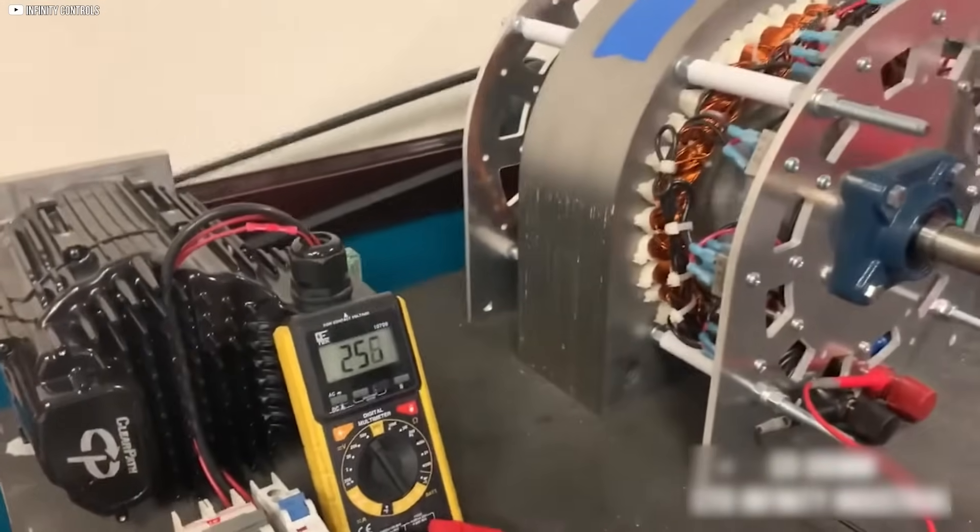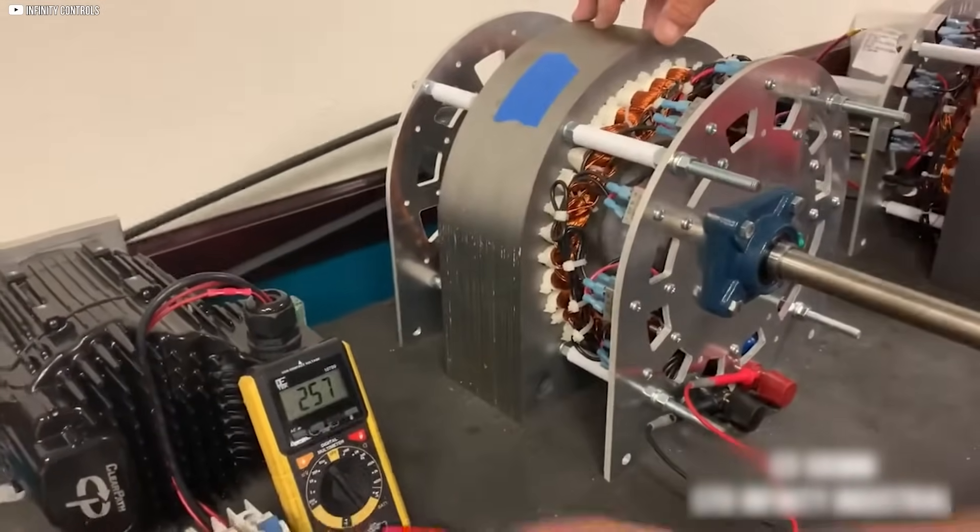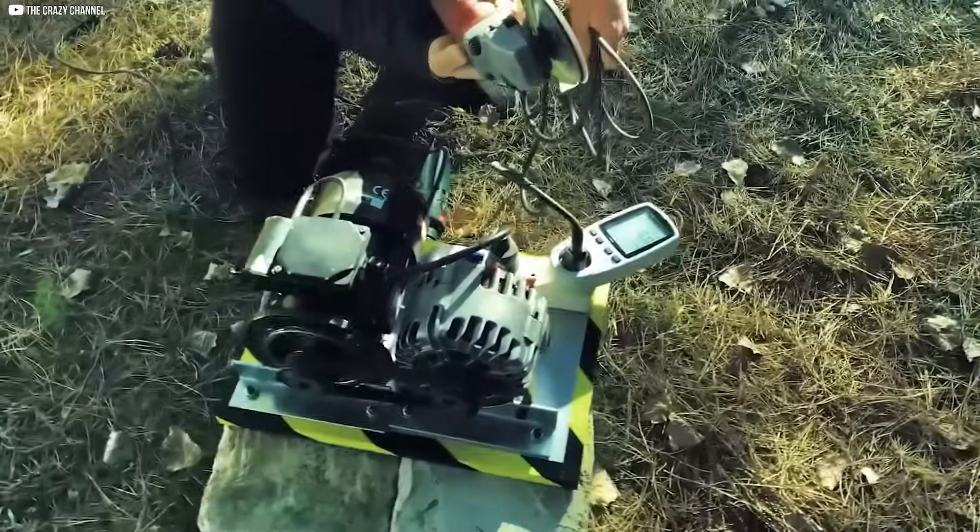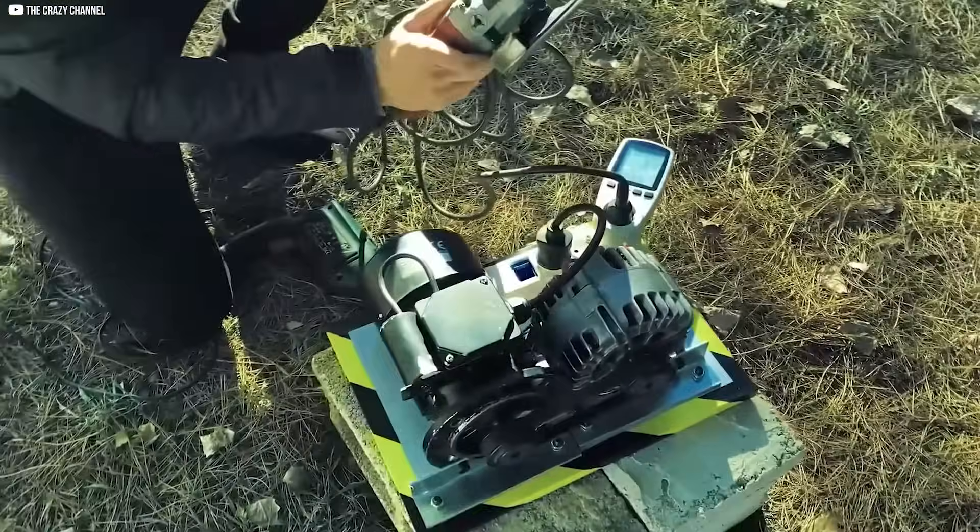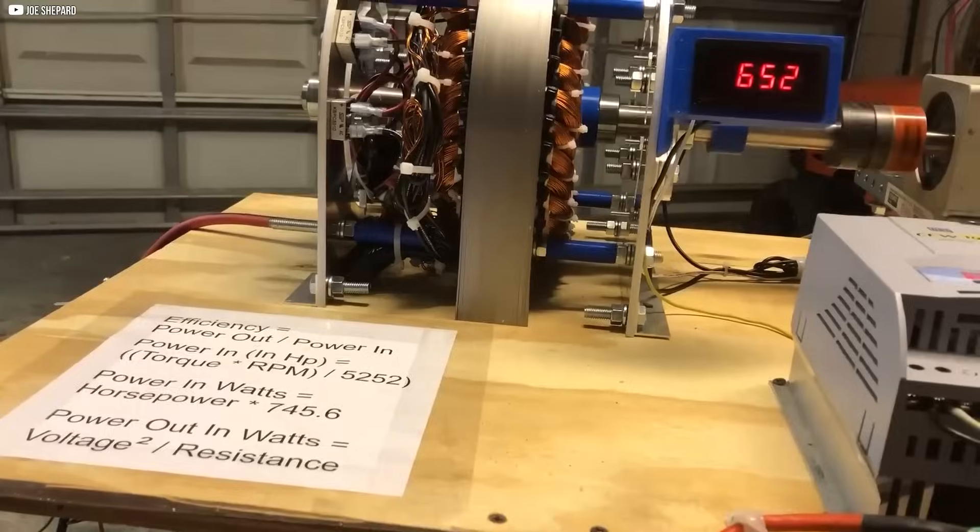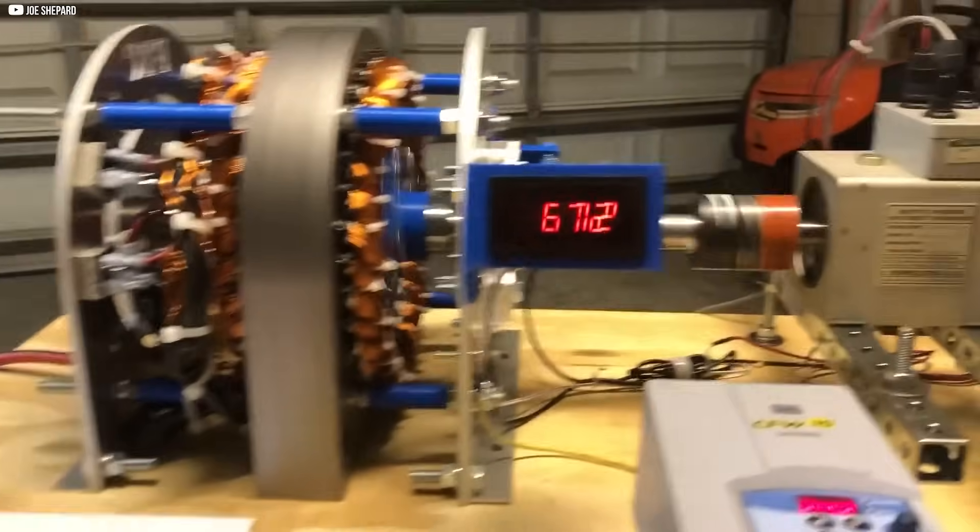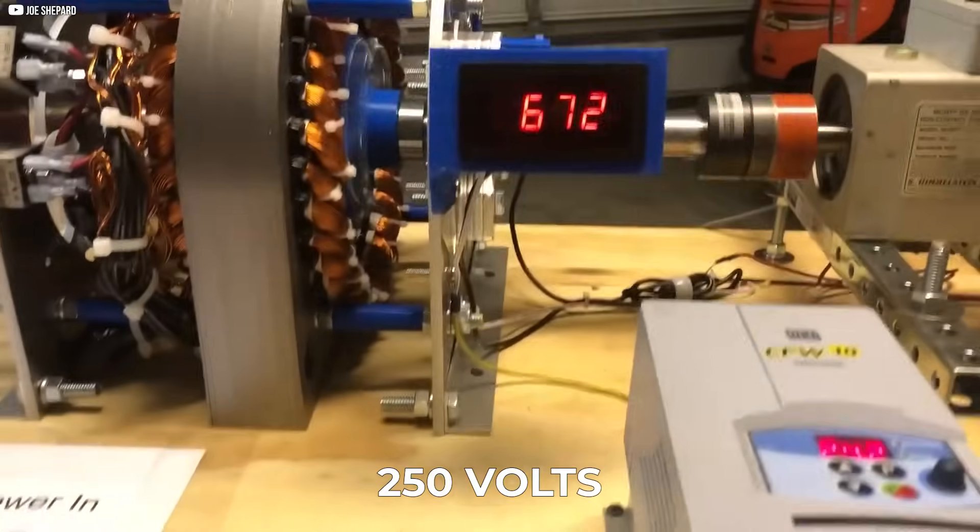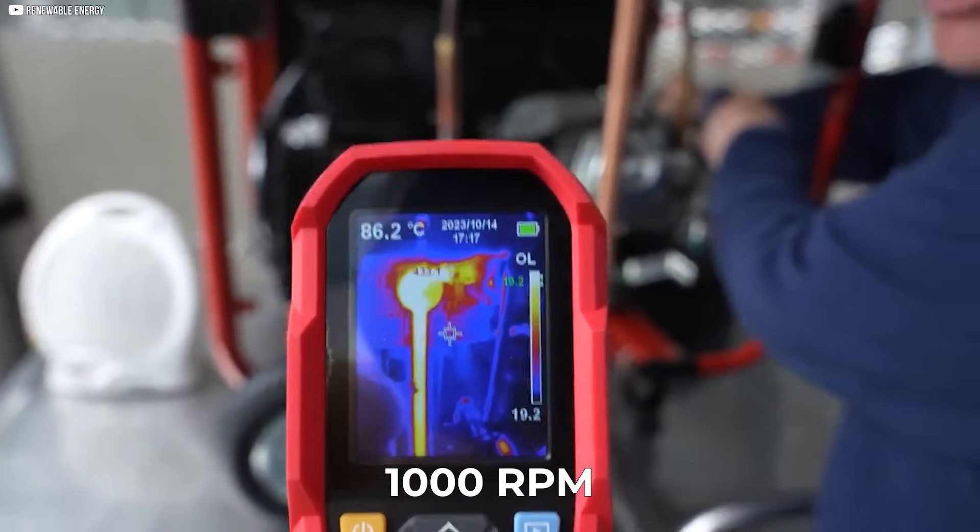This design allows the generator to operate effectively at lower speeds. Unlike conventional systems that need high RPMs to reach usable voltage levels, the iGenerator can begin generating substantial voltage over 250 volts at just around 1000 RPM.